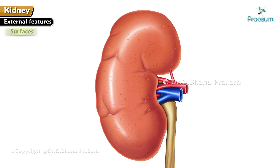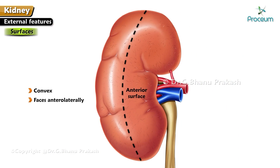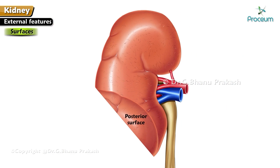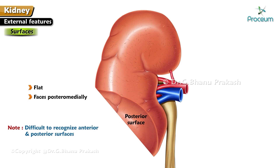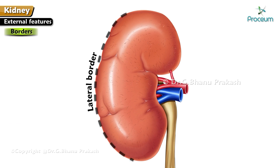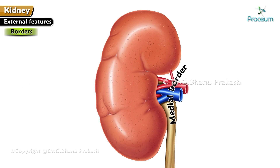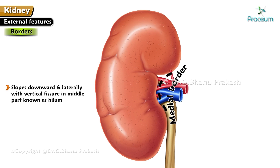The anterior surface is convex and faces anterolaterally. The posterior surface is flat and faces posteromedially; it is difficult to recognize anterior and posterior surfaces. The lateral border is convex. The medial border is convex above and below near the poles and concave in the middle, sloping downward and laterally, with a vertical fissure in the middle part known as the hilum.